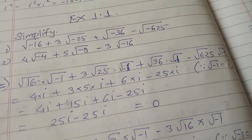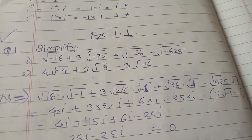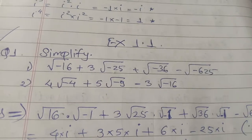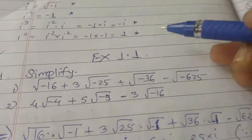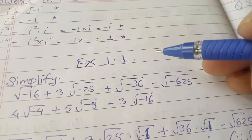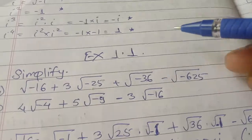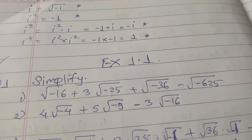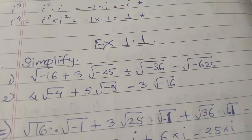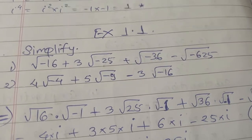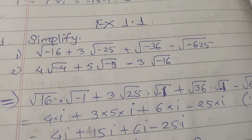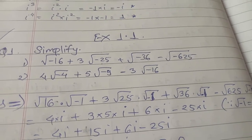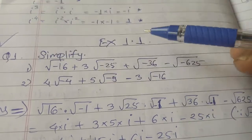Hello students. I am going to continue with the chapter Complex Numbers of 11th Science, Exercise 1.1. In the previous lecture we learned about the properties of complex numbers, the definition of complex numbers, and powers of i. Using all these properties we are going to solve this exercise.